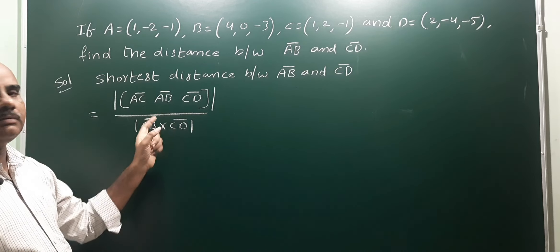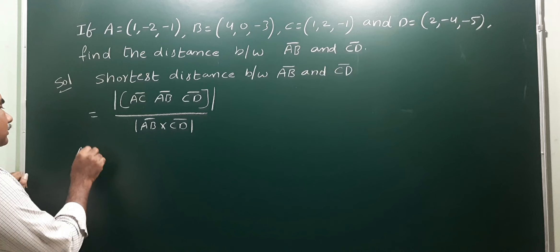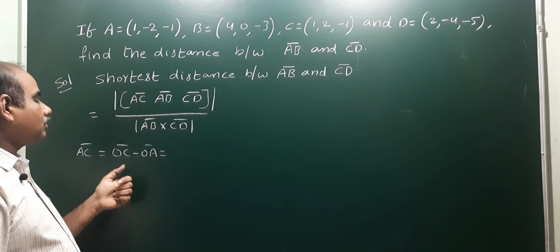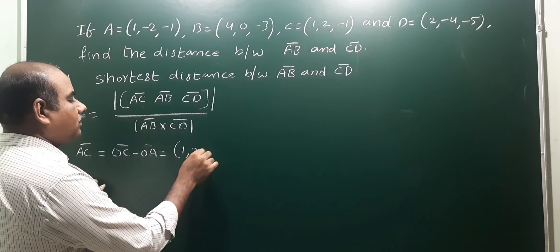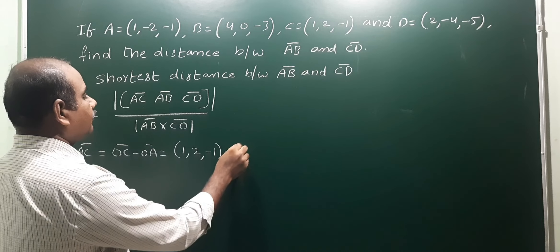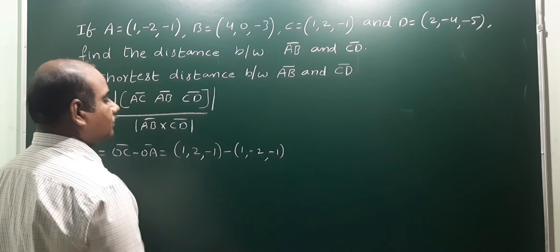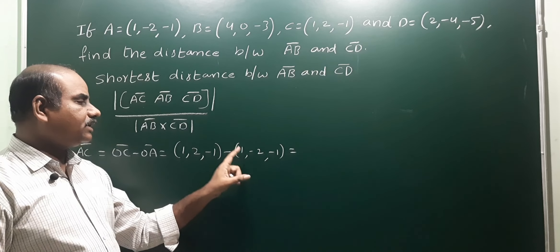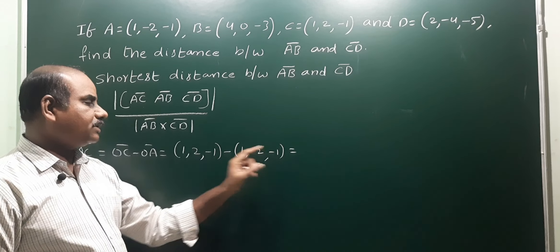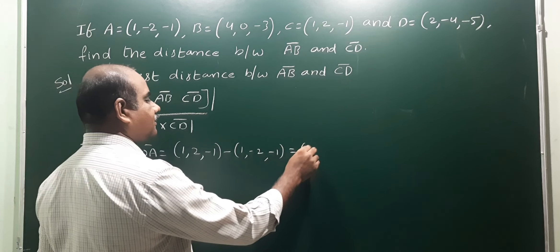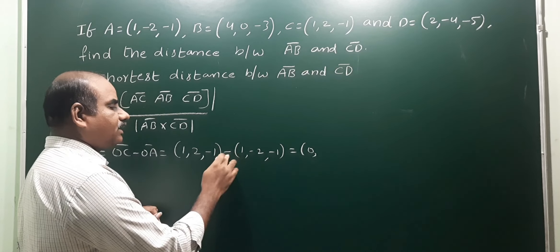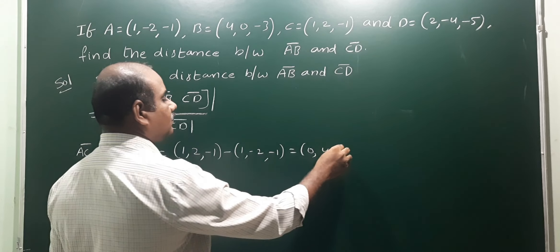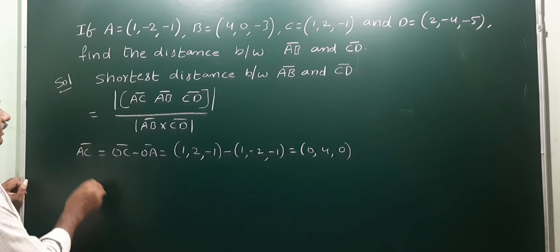AC means OC minus OA. OC is the point C: (1, 2, -1), minus OA which is point A: (1, -2, -1). Subtracting corresponding elements: x2 minus x1 gives 1 minus 1 = 0; y2 minus y1 gives 2 minus (-2) = 2 plus 2 = 4; z2 minus z1 gives -1 minus (-1) = 0. So AC vector is (0, 4, 0).